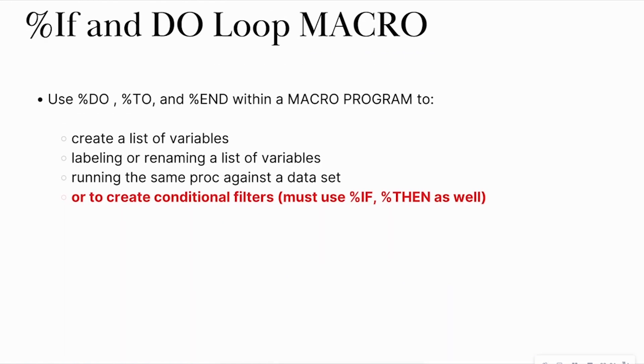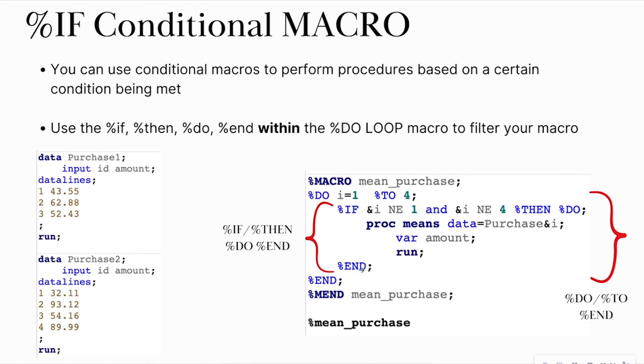Now, what about the percent-if-macro? And how can we use this inside that do loop? So in part two, like I said, part two will be linked in the description below. We talked about that do loop macro and the power of that do loop macro to help us create a list of variables, help us rename variables, as well as run a procedure against multiple different data sets. But now we're going to use that percent if-then macro inside the do loop to help create conditional filters. So the example that we have here is that we can use these conditional macros to perform procedures based off of certain conditions, and we're going to put that percent if-then-do-in within another do loop. So let's look at this example here.